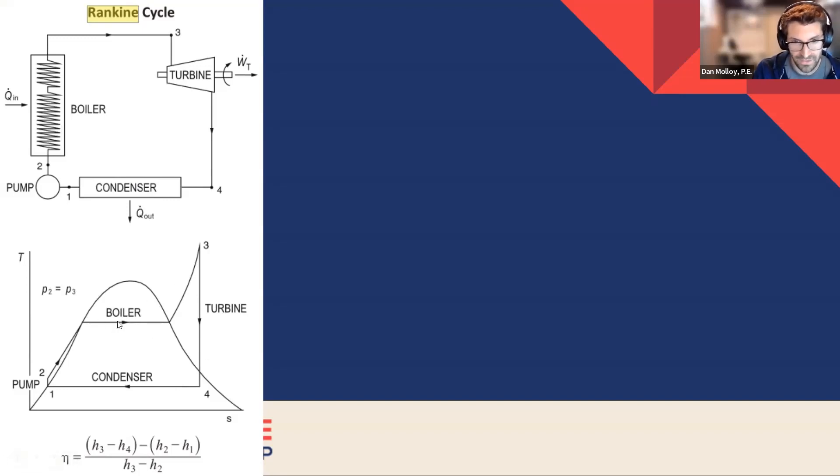Now we know what processes are constant pressure, what processes are assumed to be constant entropy. And then we have the formula for the efficiency of a Rankine cycle. So beginning with the end in mind, that's what we're ultimately going to be using at the end of this problem.